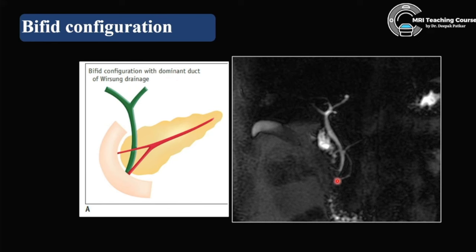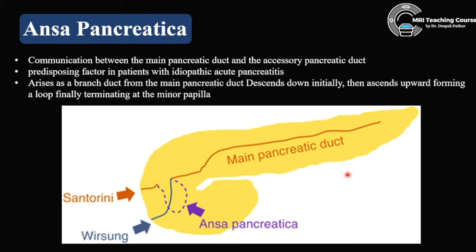This is the example of bifid configuration with dominant duct of Wirsung — the duct of Wirsung is dominant, and a minor duct is draining into the minor papilla. Always do your own reconstruction on the monitor rather than relying on images reconstructed by others. Then ansa pancreatica — this involves the minor papilla and is a communication between the main pancreatic duct and the accessory duct.